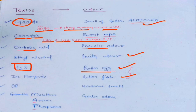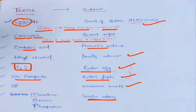Once you know that H2S shows rotten egg smell, it's easy to remember that rotten fish smell will be shown by zinc phosphide. Then organophosphate poisoning will show a kerosene smell.